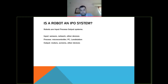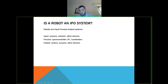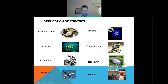Is a robot still an IPO — Input, Process, Output — system? Yes. The input can come from sensors, network, or any other device. The process can happen in a microcontroller, normal computer, or workstation. The output can be given to motors, screens, and other devices. Robots have many, many applications: production, manipulators, entertainment, housework, clinical, defense, education, exploration.